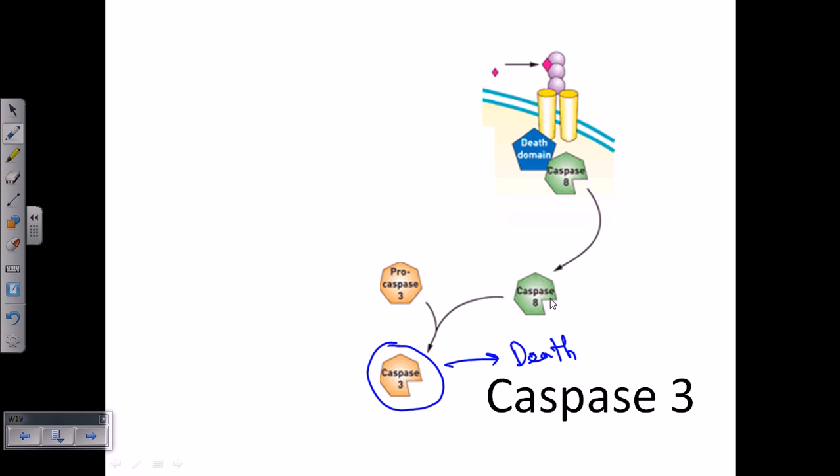But actually, caspase 8 finally activates caspase 3, because pro-caspase is the earlier form which is the early stage of caspase after translation, and then pro-caspase is turned into caspase 3, and caspase 3 will bring the death. This is one simple linear pathway of apoptosis there.